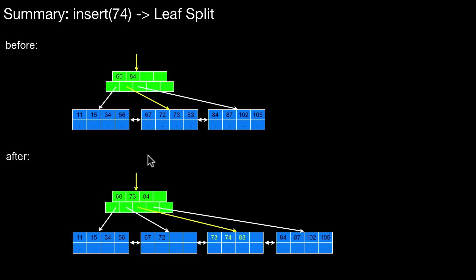As an overview, here we see the state before the split and after the split. One thing to notice is the number of levels in the tree is unchanged — no additional levels are created. We simply have an additional leaf node on the same level, which means the tree gets wider, gets broader. It doesn't increase its height; it's just increasing its width.